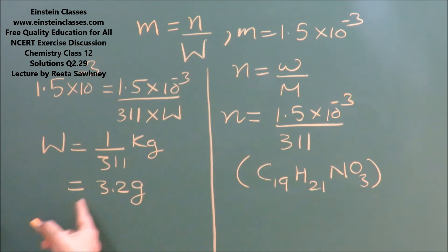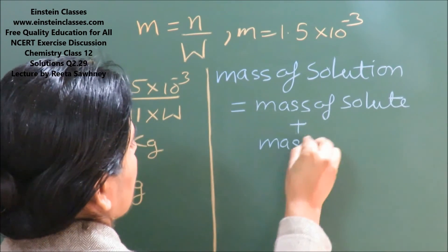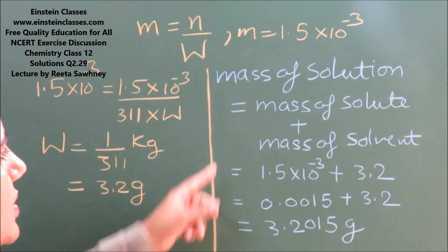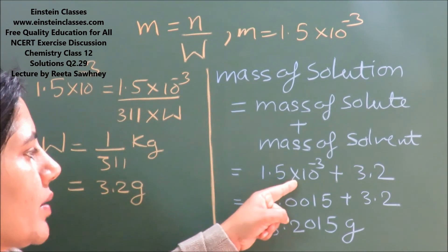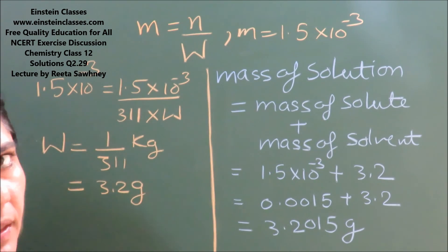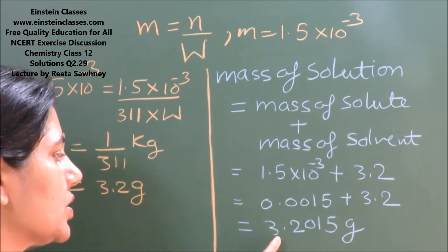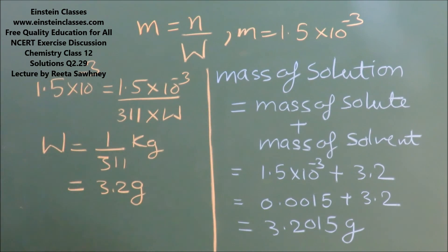By adding the mass of solvent to the mass of solute, we can find out the mass of solution. Mass of solution = mass of solute + mass of solvent. The mass of solute is 1.5×10⁻³ g and the mass of solvent is 3.2 g, so the mass of solution comes out to be 3.2015 grams. This is the mass of the solution.